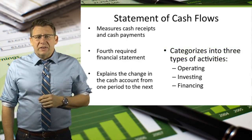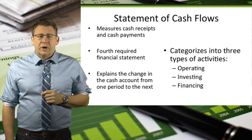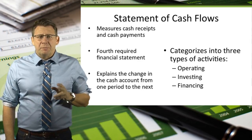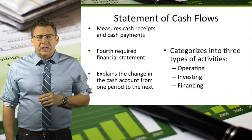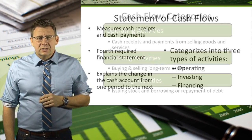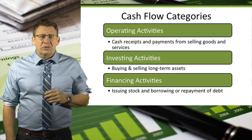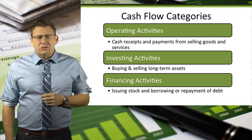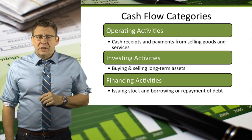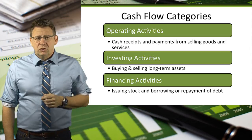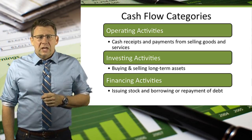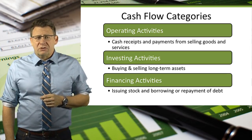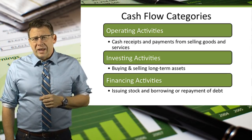The statement of cash flows reports the change in cash for a reporting period by reporting cash receipts and payments from three categories of activities. The operating activities section reports cash collections and payments from transactions related to the operations of a business, like buying and selling goods or services. The investing activities section reports cash receipts and payments for transactions involving long-term assets.